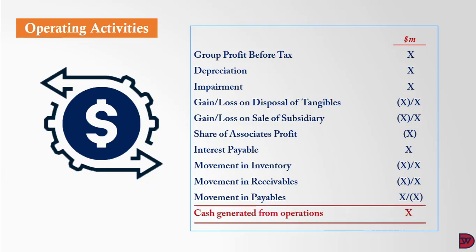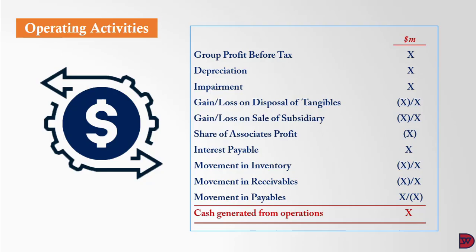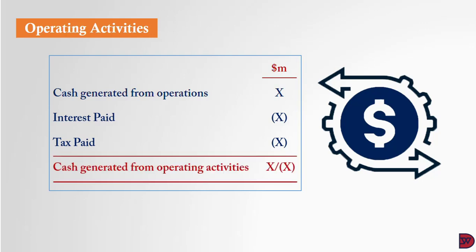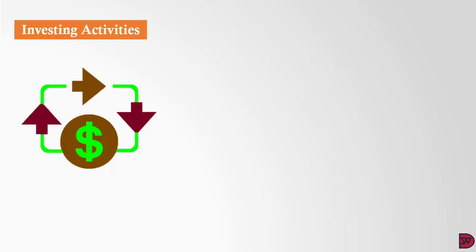We proceed to adjust certain figures. The interest that was adjusted from the group profit before tax — once we ascertain the actual amount that was paid, we subtract it. Then we subtract the tax that was actually paid. After these adjustments, we'll know the total amount the business generated — whether a surplus or a deficit — through its activities within that particular financial year.